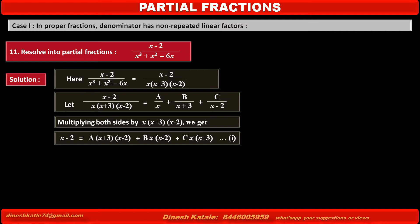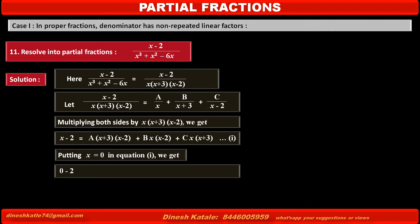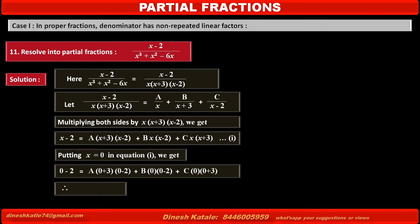Now we find the values of A, B, and C. To find the value of A, putting x equal to 0 in equation 1: the left hand side becomes 0 minus 2, and the right hand side gives A into (0 plus 3)(0 minus 2), with the B and C terms becoming zero. Solving, minus 2 equals A into minus 6, therefore A equals 1 upon 3.